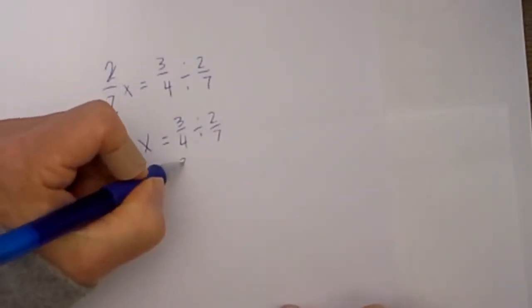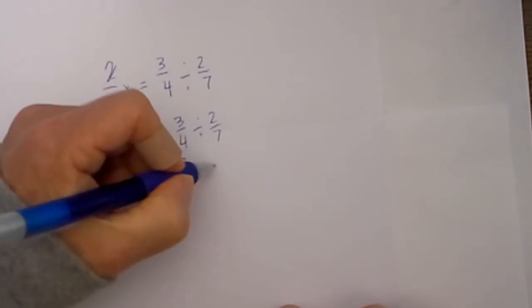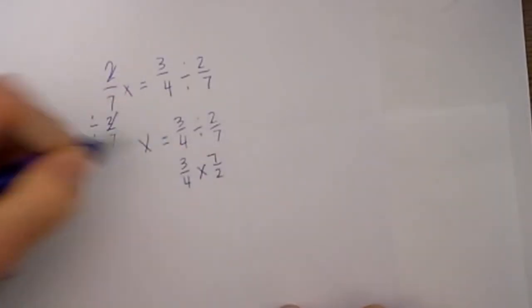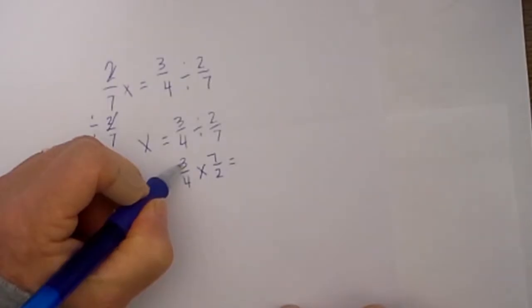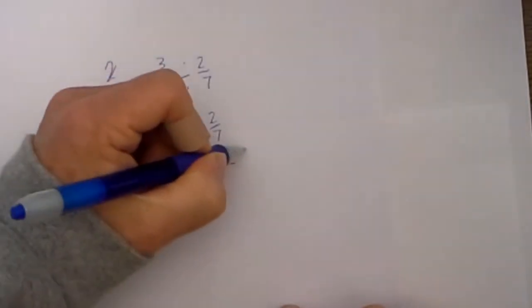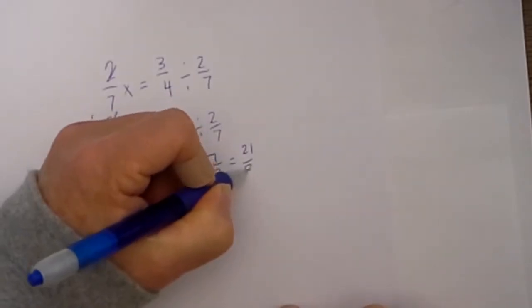I will keep the first fraction. I will change the sign and then I will flip the last fraction. I multiply straight across. 3 times 7 is 21 and 4 times 2 is 8.